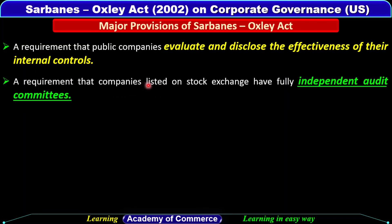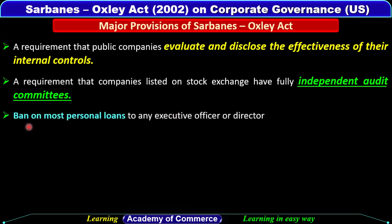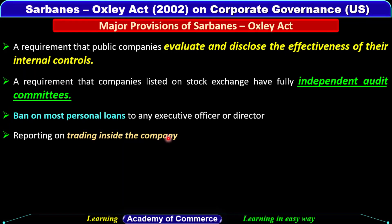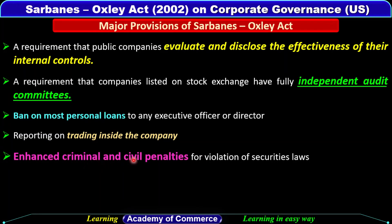There is a requirement that companies listed on a stock exchange have fully independent audit committees. Also, there is a ban on most personal loans to any executive officer or director. Additionally, companies are required to report on insider trading — that is, trading done on the basis of confidential company information that has not yet been made public, which is an illegal activity.